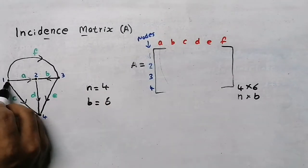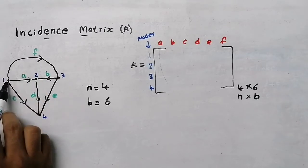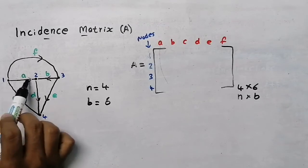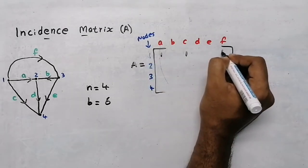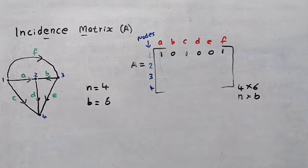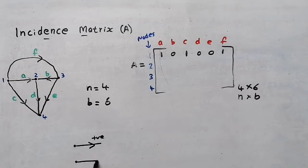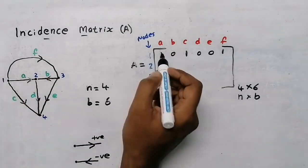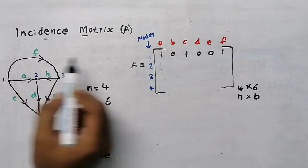First, take node 1. At node 1, branches a, c, and f are connected — three branches total. So near a put 1, near c put 1, near f put 1, and the remaining entries put 0. For the sign: if a branch is moving away from a node, put positive (+1); if a branch is coming into the node, put negative (−1). From node 1, branches a, c, and f are all moving away, so all are +1.